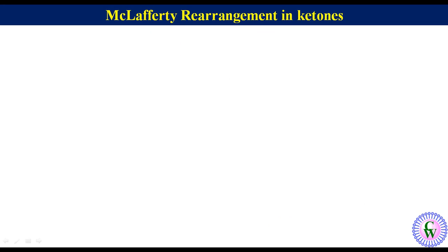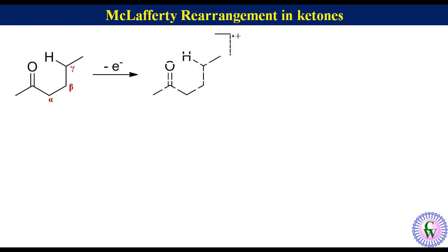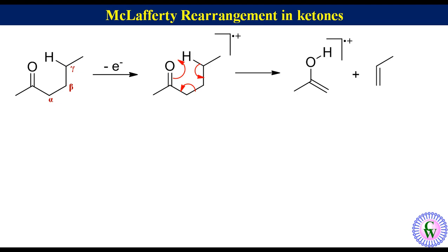McLafferty rearrangement in ketones. Here we are taking the example of 2-hexanone. These are alpha, beta, and gamma carbons. The gamma carbon has hydrogen. From now onwards I will be using the second way of fragmentation as I find it easier. Removal of one electron from the molecule will give this radical cation, which after McLafferty fragmentation will give the enolic radical cation — also called the McLafferty fragment — and a propene molecule. The McLafferty fragment will have an m/z value of 58.